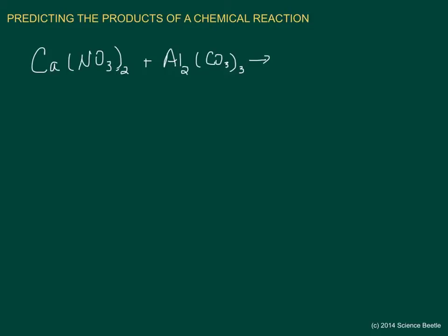We've got two reactants on the left-hand side, so let's find those. Calcium is going to be positive because it's the first atom — the first atom is always positive. The nitrate is going to be negative, the aluminum is going to be positive, and the carbonate is going to be negative.